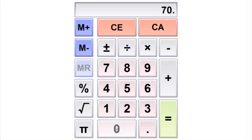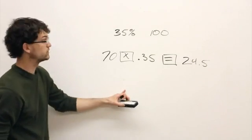If you punch this in your calculator—70 multiplied by 0.35 equals—you're going to get 24.5. That's exactly how you do it in a calculator.